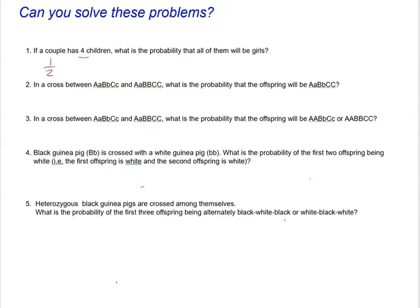We have a couple that has four children — a girl, and another girl, and another girl, and another girl. So we have to apply the rule of multiplication. We multiply one half × one half × one half × one half, and the probability that all of them will be girls is 1/16. That's the answer.